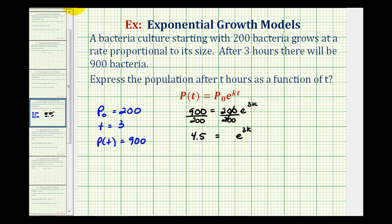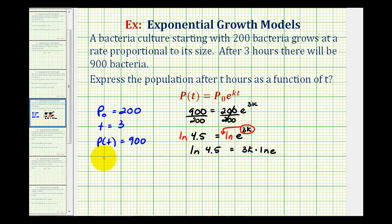To solve for k we take the natural log of both sides. We can then apply the power property of logarithms and move the exponent three k to the front, giving us: natural log of 4.5 equals three k times natural log of e. Since natural log is log base e, natural log of e equals one, so we simply have natural log of 4.5 equals three k.